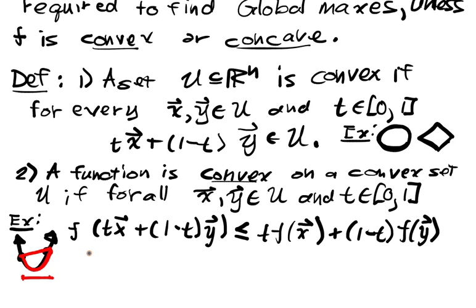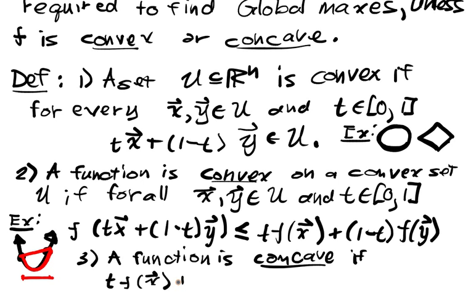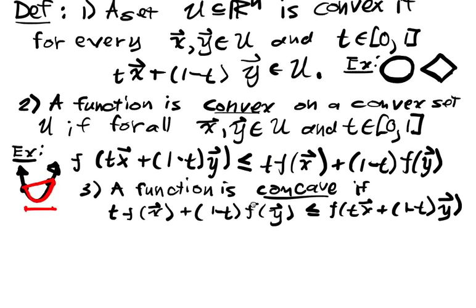Then there's the opposite notion of concavity. So a function is concave on a convex set u if instead we reverse the inequality. So we've got tf(x) plus (1 minus t)f(y) is less than or equal to f of (tx plus (1 minus t)y).